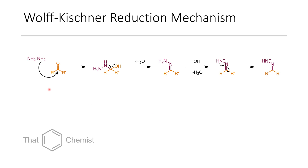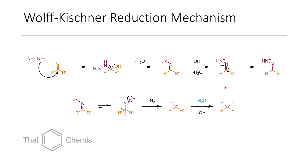The mechanism of the Wolff-Kishner: first, hydrazine condenses on the ketone and eliminates water, forming a hydrazone. Then the hydrazone is deprotonated with base, allowing a proton shift. The nitrogen then collapses to form a carbanion, which eliminates nitrogen gas, and the resulting carbanion is protonated by water to give the CH₂ product.